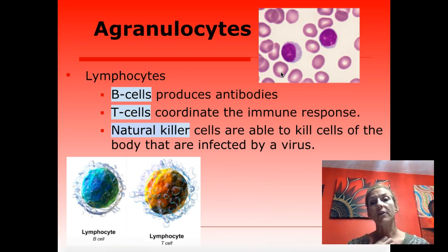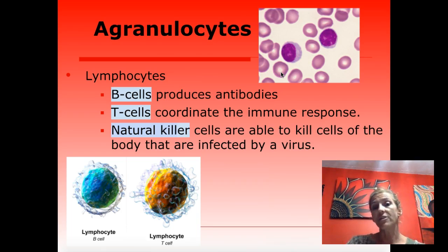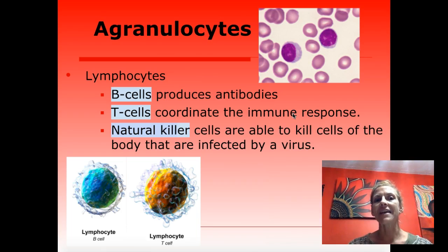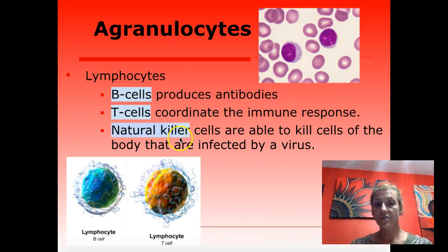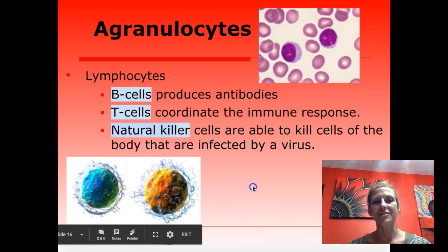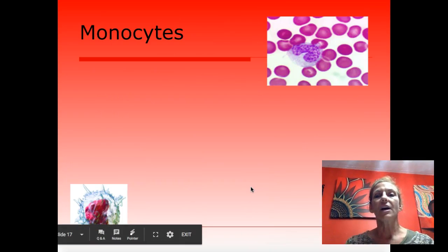B cells are made and mature in the bone marrow and produce antibodies that identify foreign invaders and target them for destruction. T cells are made in the bone marrow but migrate to the thymus gland where they mature and gain immunocompetency, allowing them to identify foreign invaders and go into tissue spaces to kill infected cells. Natural killer cells specifically target your own cells that are infected by viruses — they kill your infected cell to eliminate the foreign invader.